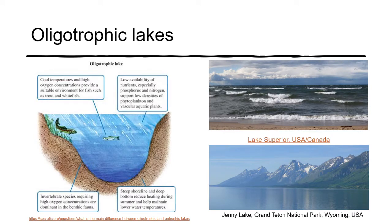Oligotrophic lakes are typically cool, have high oxygen levels, and provide a suitable environment for fish such as trout and whitefish. Lake Superior is an oligotrophic lake. These lakes typically have low availability of nutrients, especially phosphorus and nitrogen, and therefore have low concentrations of phytoplankton and other plants that would grow along the shoreline. Jenny Lake in the Grand Tetons is also an oligotrophic lake.